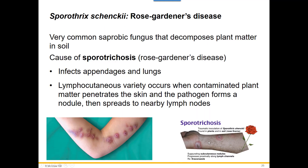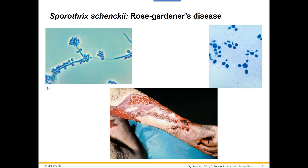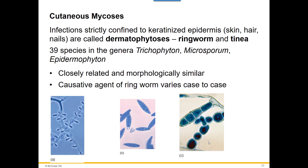Cutaneous mycoses are fungi that stay on the skin, feeding on the keratin portion of our skin, hair, and nails. They're all called dermatophytoses — 'derm' meaning skin — and are also nicknamed ringworm or tinea. There are 39 species in the genera Trichophyton, Microsporum, and Epidermophyton. These are all dermatophytes that live on the keratin of the skin, hair, and nails. They're all closely related and morphologically similar, and they all cause what we normally nickname ringworm.